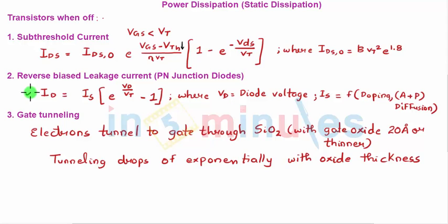The last one was gate tunneling. We saw this as one of the drawbacks of scaling. Though SiO2 is a very good insulator, electrons can tunnel to gate through SiO2 if the gate oxide thickness is 20 angstroms or less, because tunneling drops off exponentially with oxide thickness. If oxide thickness is high, tunneling is low and vice versa.